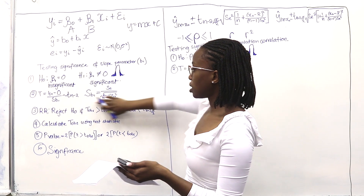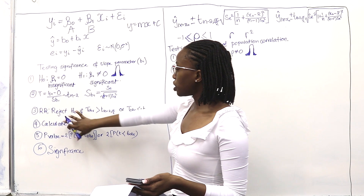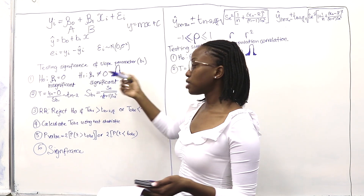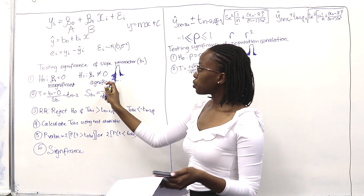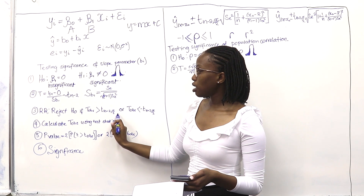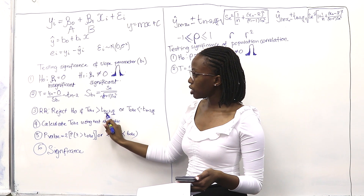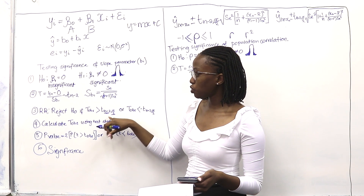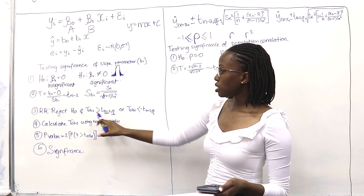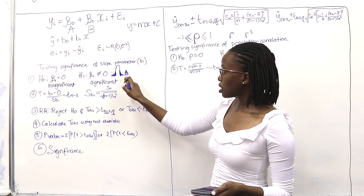That is your test statistic. Now for the rejection region: since H1 says beta 1 is not equal to 0, it's a two-sided test, so the rejection region is on both sides. We use alpha over 2. The degrees of freedom in regression analysis is always n minus 2. We reject H0 if T observed is greater than t(n−2, α/2).